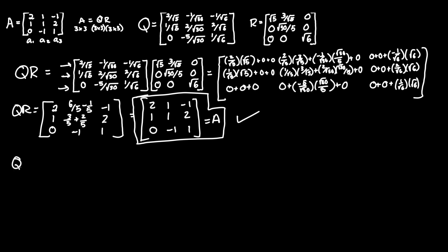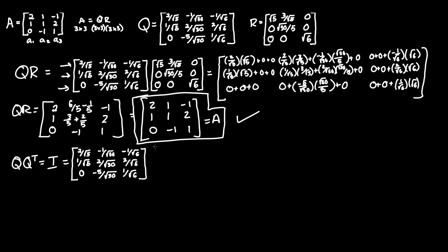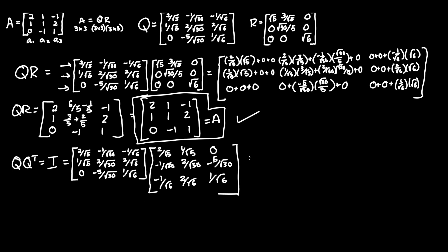For the last proof, Q times Q transpose should equal the identity matrix I. Let's see if that's true. I copy down Q again, and for its transpose, all you do is swap out the rows with columns. Q transpose becomes: row 1 is (2/root5, -1/root30, -1/root6), row 2 is (1/root5, 2/root30, 2/root6), row 3 is (0, -5/root30, 1/root6). Now let's multiply these two together, which is pretty much the same process as Q*R.